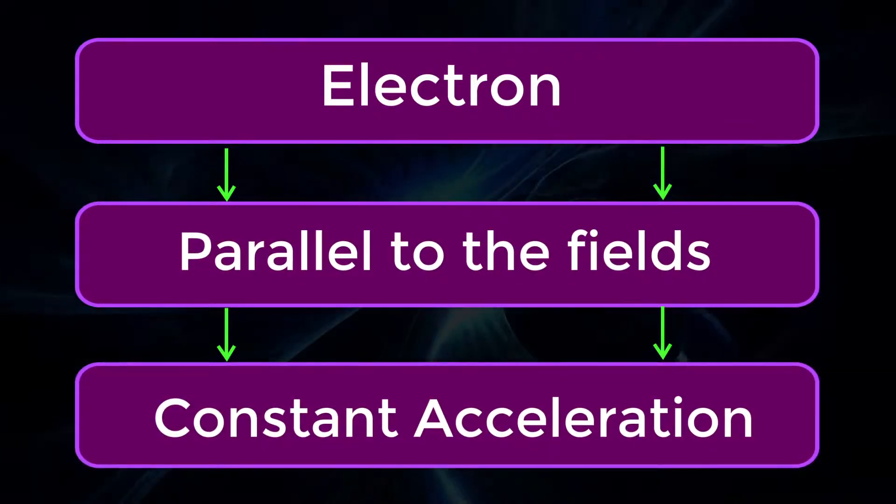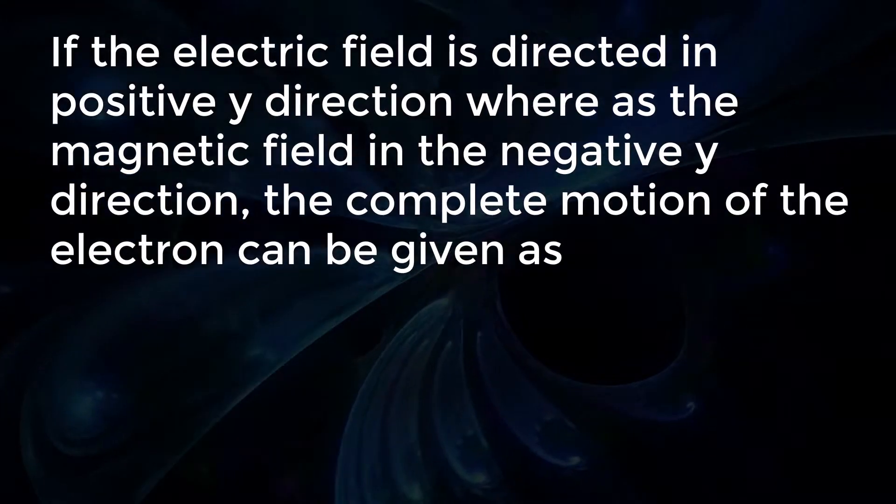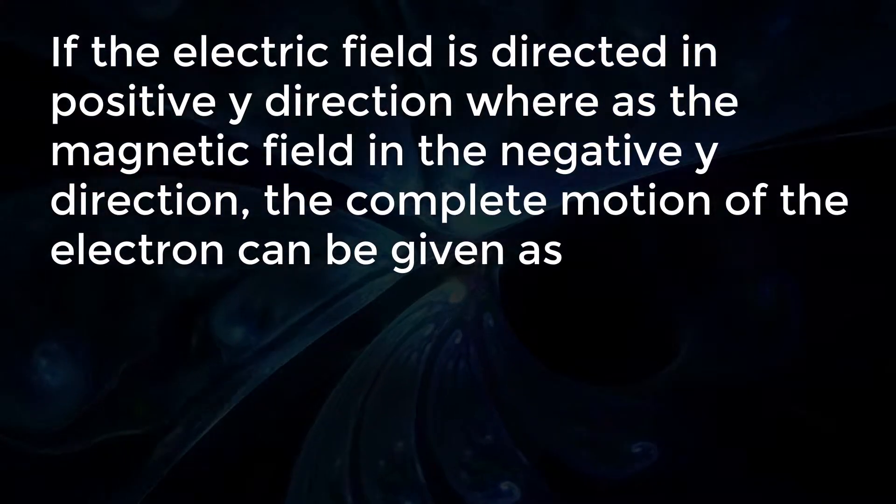The electron will move in a direction parallel to the fields with constant acceleration if the electric field is directed in positive y direction whereas the magnetic field in the negative y direction.